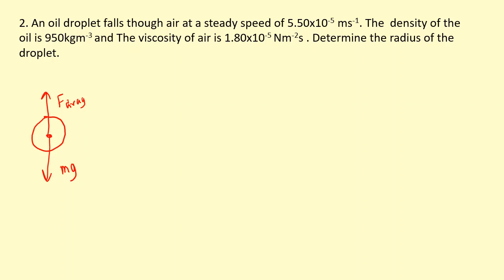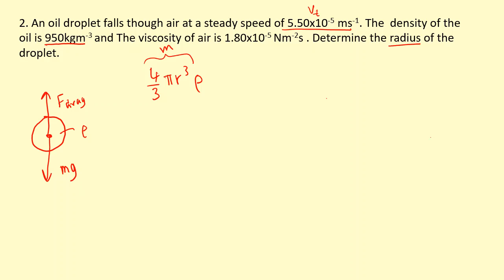We've been given the density and want to find the radius; we have the terminal speed and viscosity. Since we have density but not mass, we calculate mass using the volume of a sphere: volume = (4/3)π r³. Multiplying volume by density gives mass, and multiplying by gravitational field strength gives the weight mg, which we set equal to 6π eta r v_t.